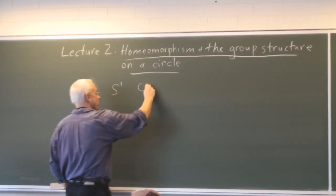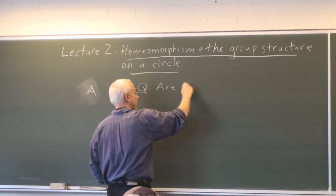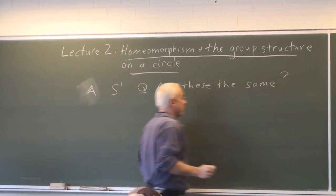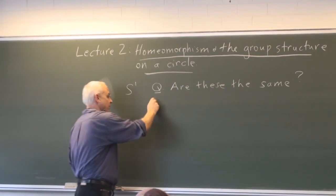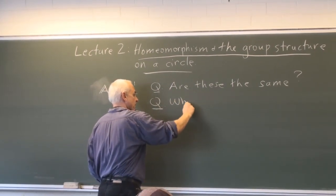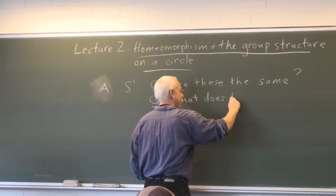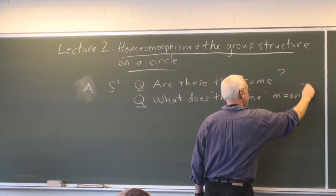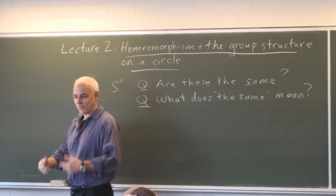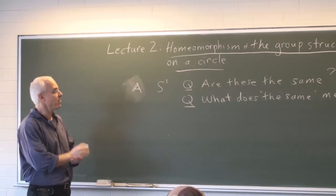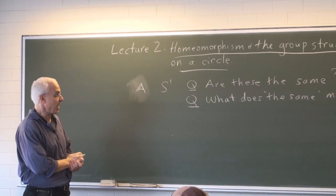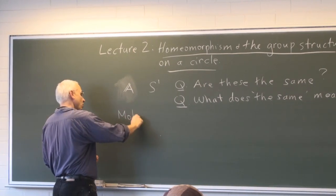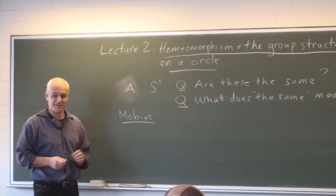I left us with the question: are these the same? That implies another question — what does 'the same' mean? It's actually not so obvious what it means for two topological spaces to be the same. It's a notion that only came into focus in the middle of the 19th century due to the work of Möbius, who we'll see in other contexts a little while later.